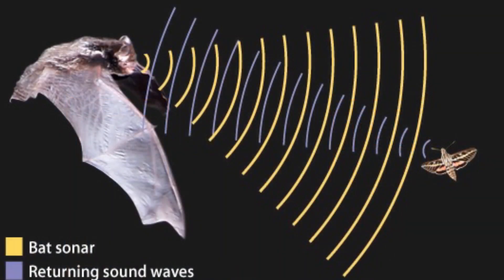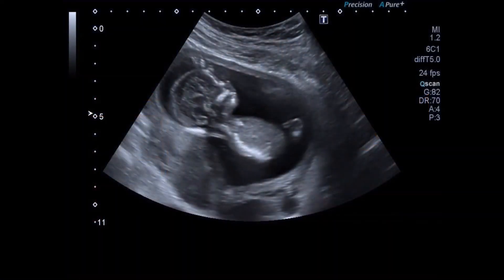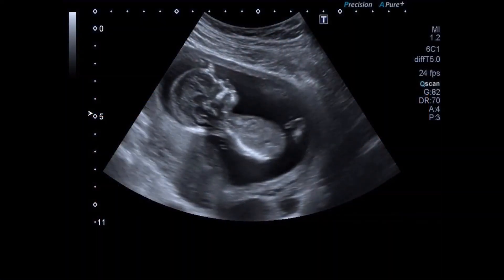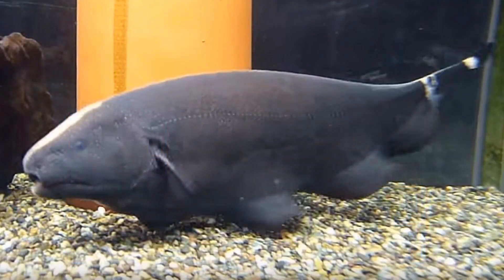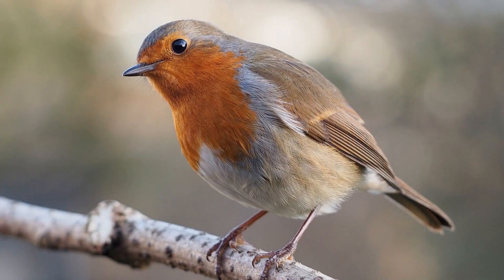Imagine you were born an echolocating bat. Your brain would then use ultrasound instead of light, and your ears would be the window for your brain to create a map of the world — and perhaps that's how you would see the reality around you. The black ghost knifefish, for example, uses electrical fields to create a vision map around it, not light. And some birds can see the magnetic field of Earth.